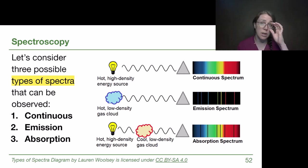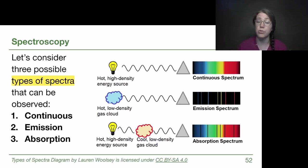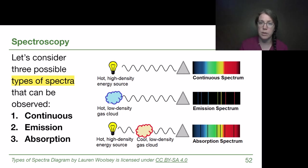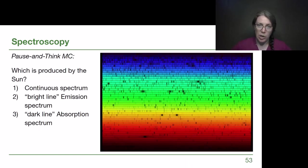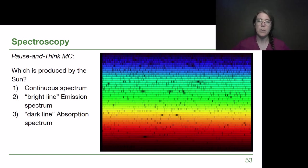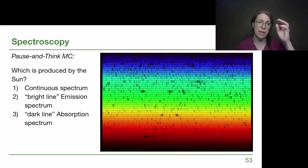I strongly encourage you to pause and draw this out in your notes, labeling the path that light is traveling and what we call each type of spectrum. Here we have a picture of the sun's spectrum — taken from the ground, but very similar to what we'd see from a satellite. This is what sunlight looks like. We kind of read it like a book, where all those different lines would be lined up next to each other.